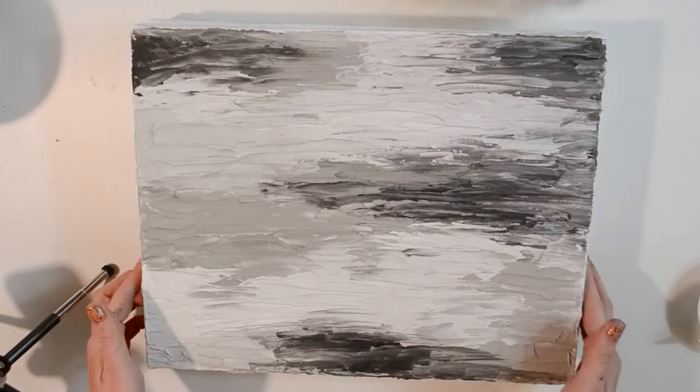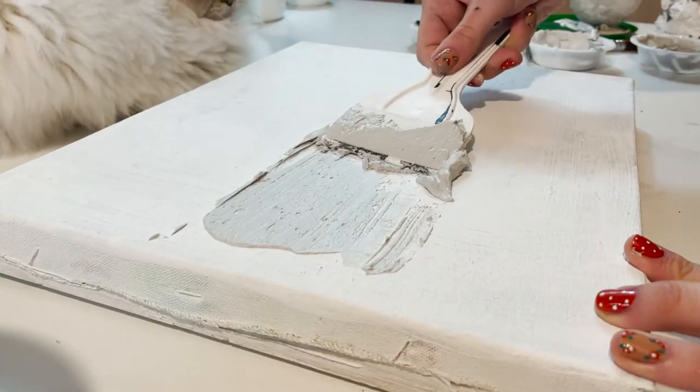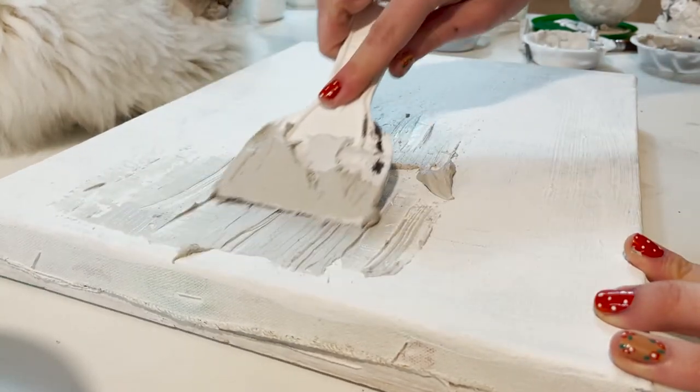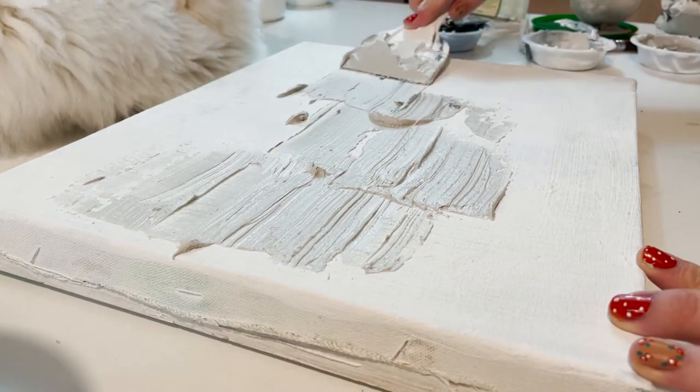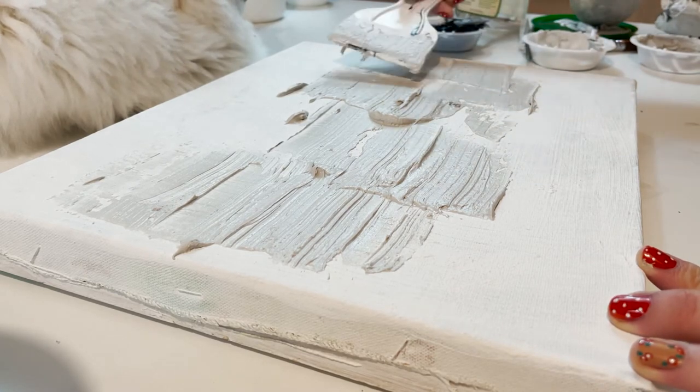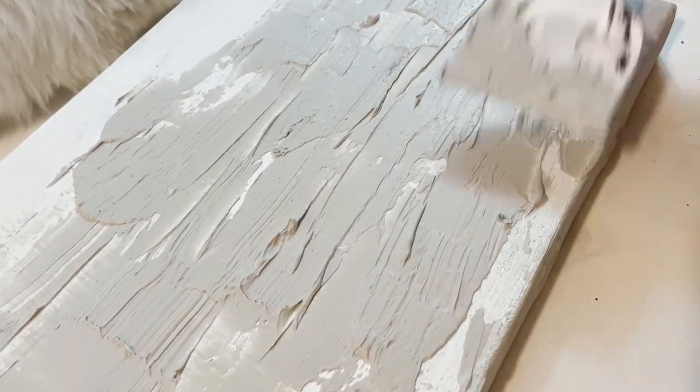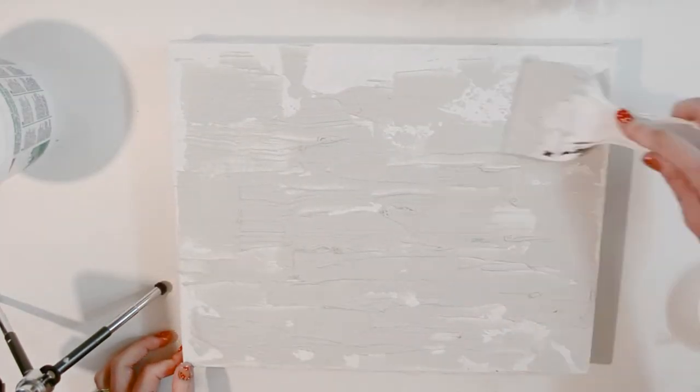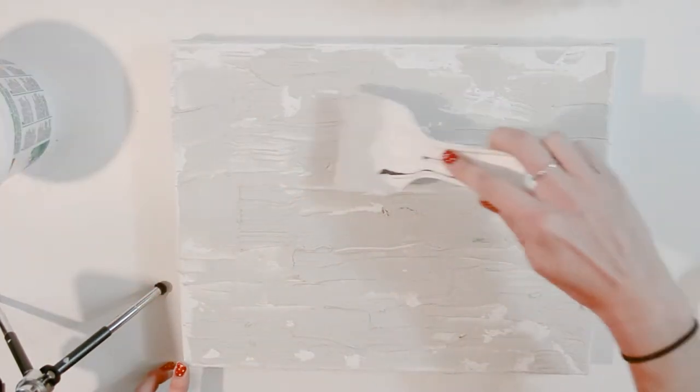For this last technique, it was still using joint compound, but a little bit different. Instead of mixing the paint in, I just began to spread the joint compound all over the canvas. I wanted to give this technique a try because not having the paint mixed in, I could really focus on the texture and building the texture. When I had the paint mixed in, I couldn't focus on the texture solely. I needed to blend everything out nicely.